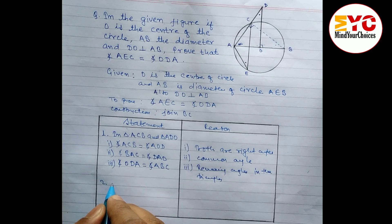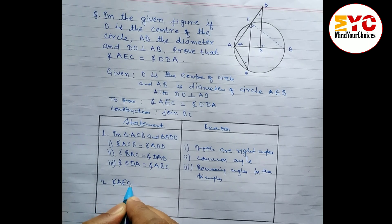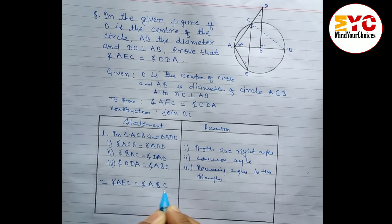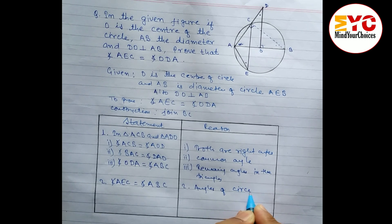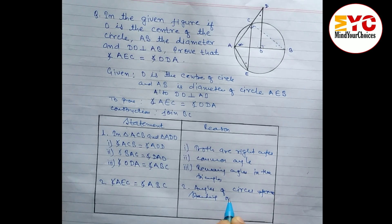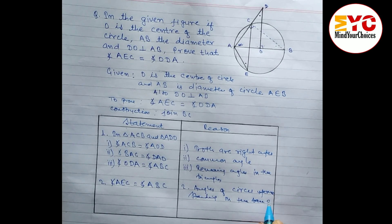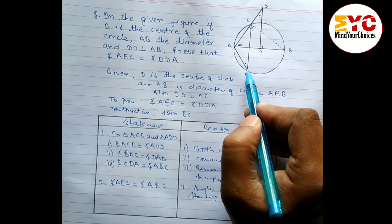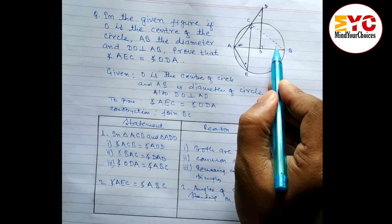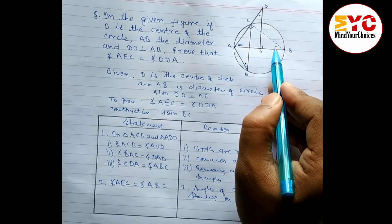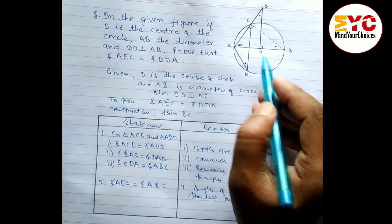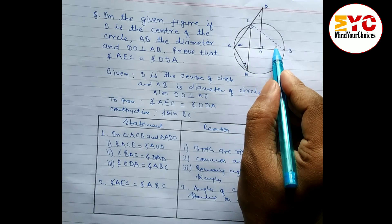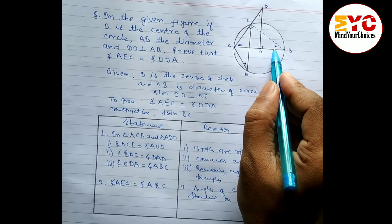In the next step, angle AEC equals angle ABC. The reason is that these are angles at the circumference — inscribed angles standing on the same arc AC. Both inscribed angles are equal because they stand on the same arc.